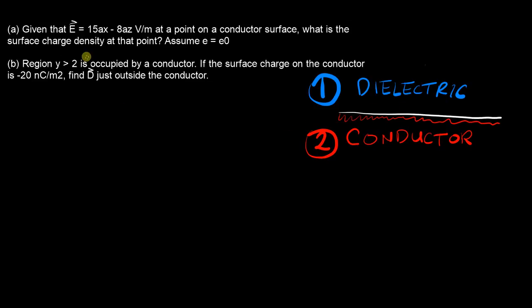So the question is asking, given some electric field at a point on the conductor surface, what is the surface charge density ρs at that point, assuming the permittivity epsilon is equal to just epsilon naught.